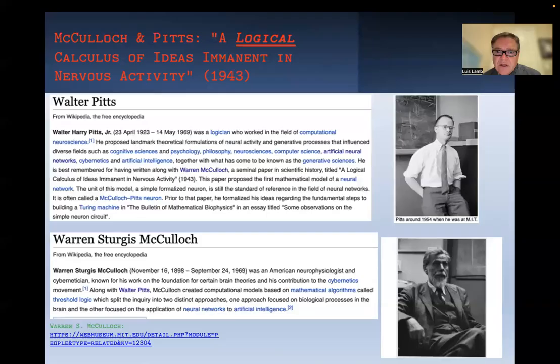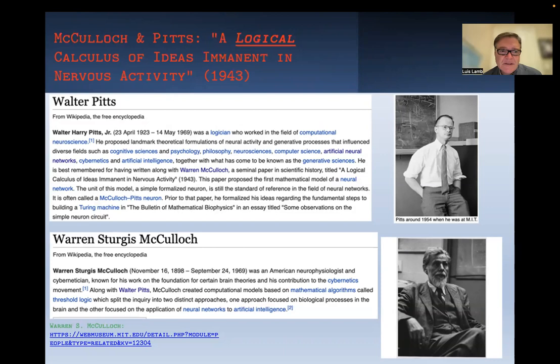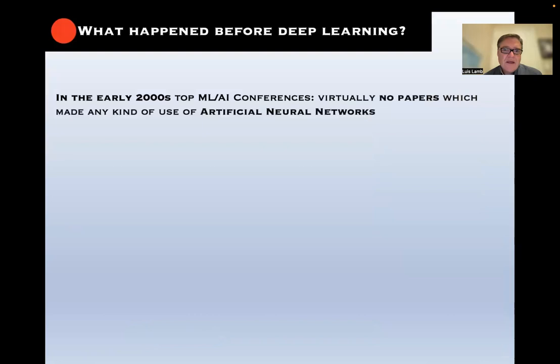Von Neumann was referring to an early paper by McCulloch and Pitts, which was perhaps the first Neurosymbolic paper ever published in the 20th century. Its title read 'A Logical Calculus of Ideas Immanent in Nervous Activity.' This work influenced the perceptron model and early artificial neural networks from the 1950s through the early 1980s.